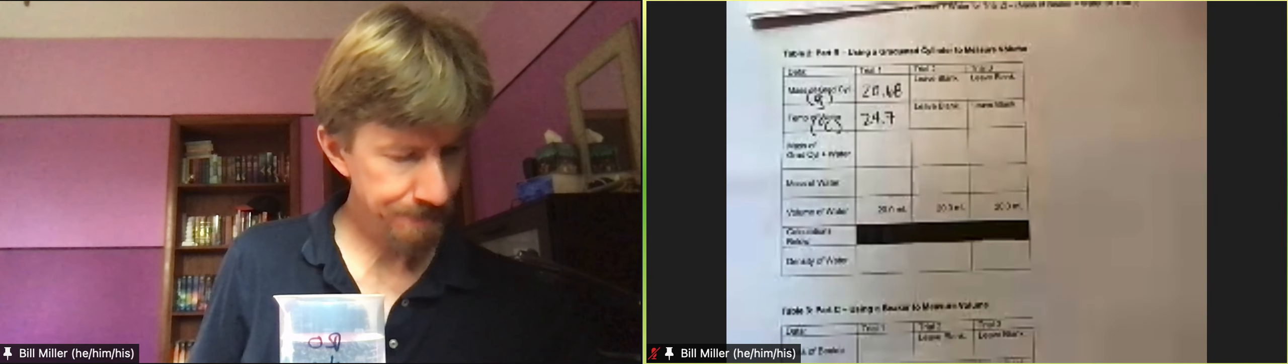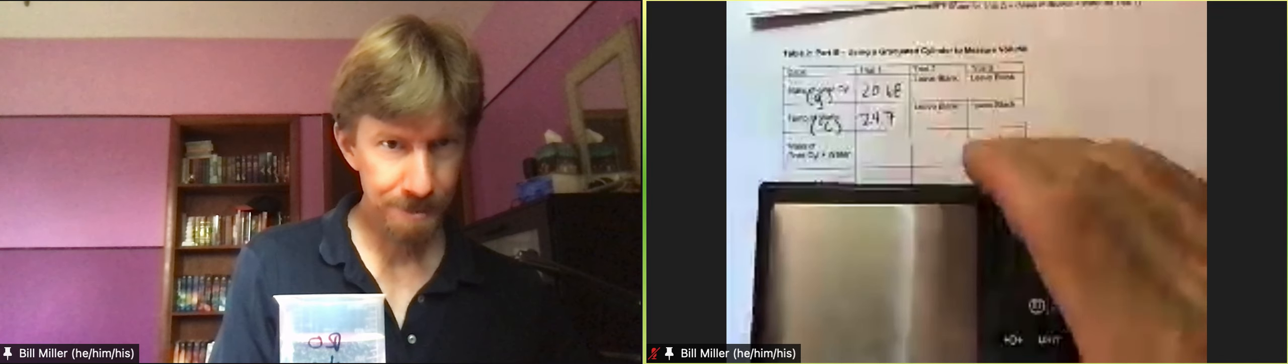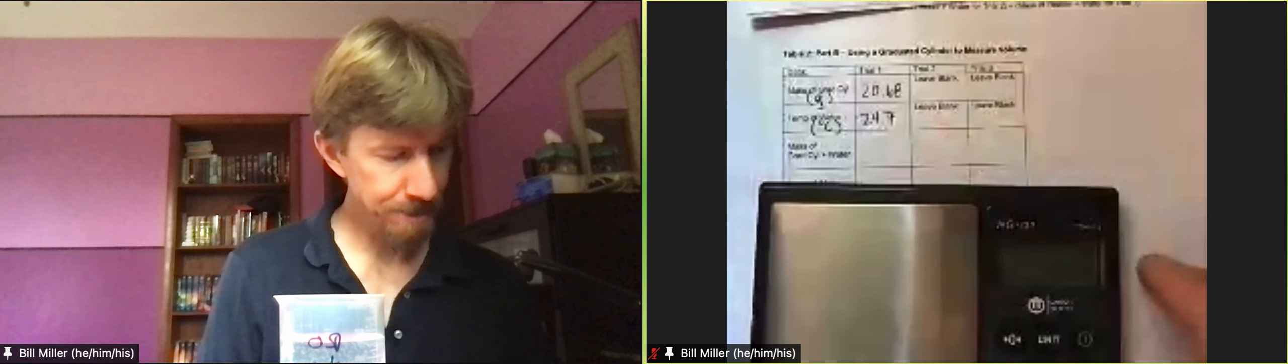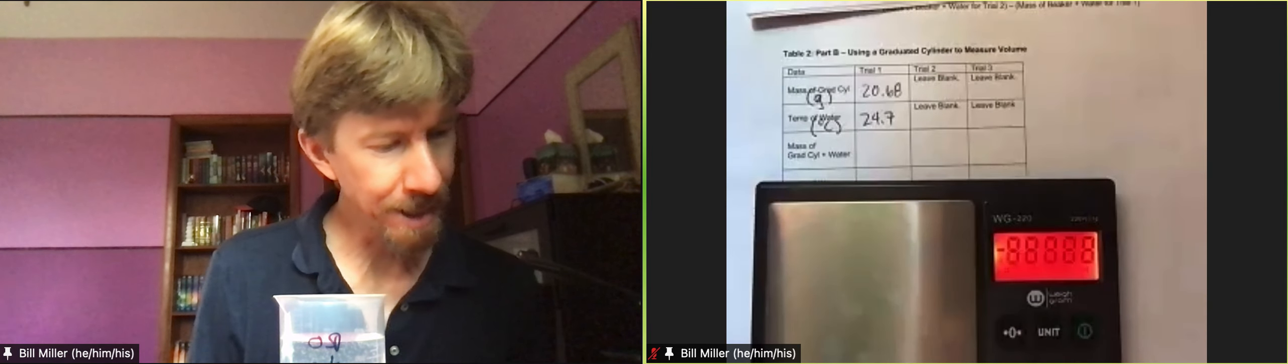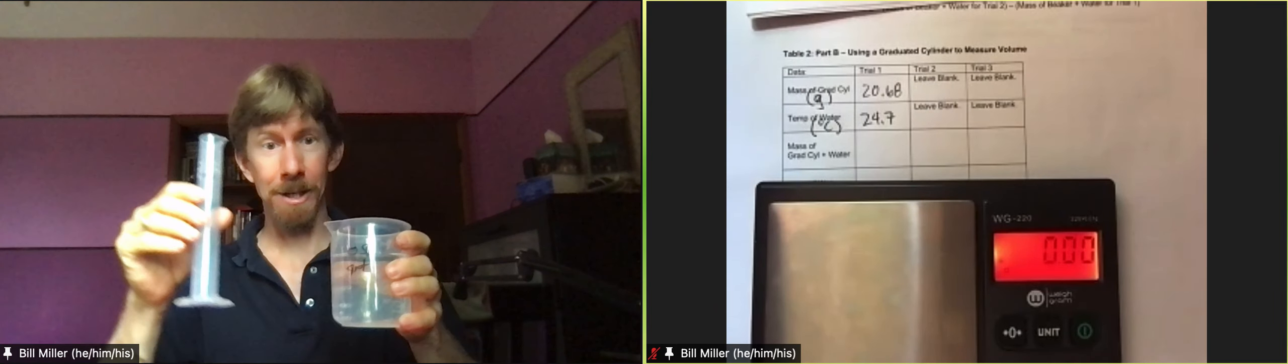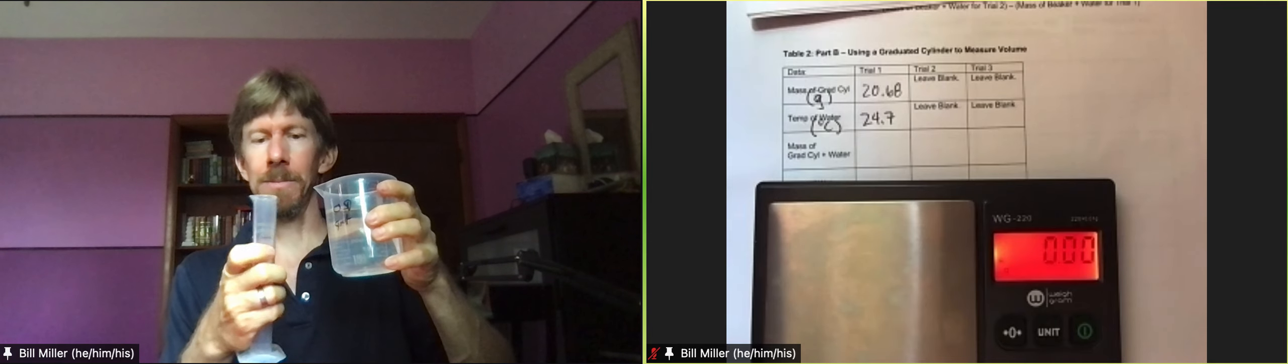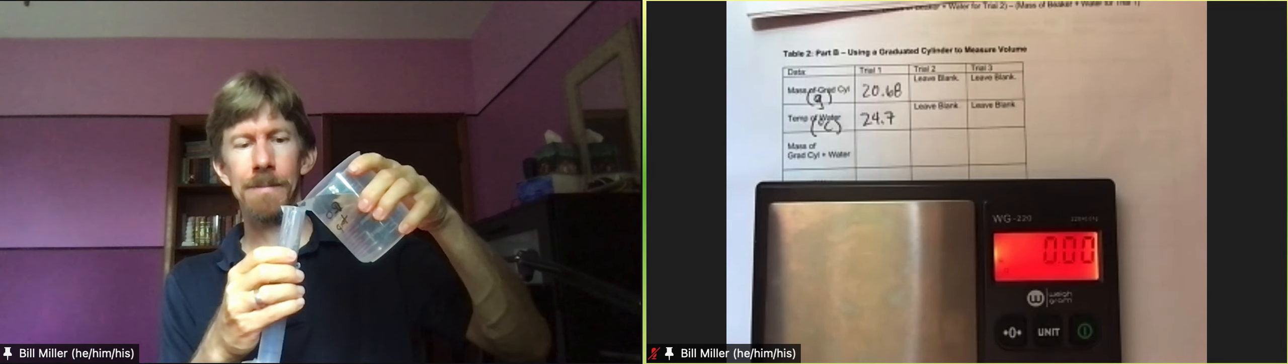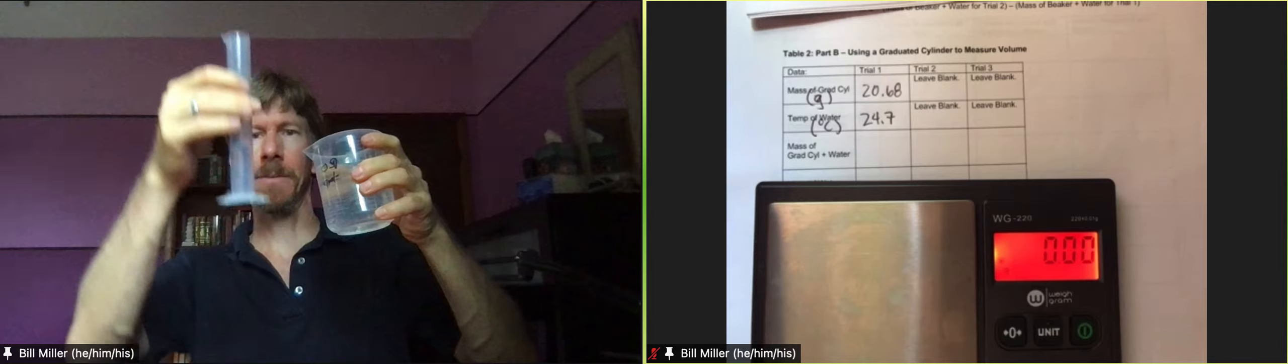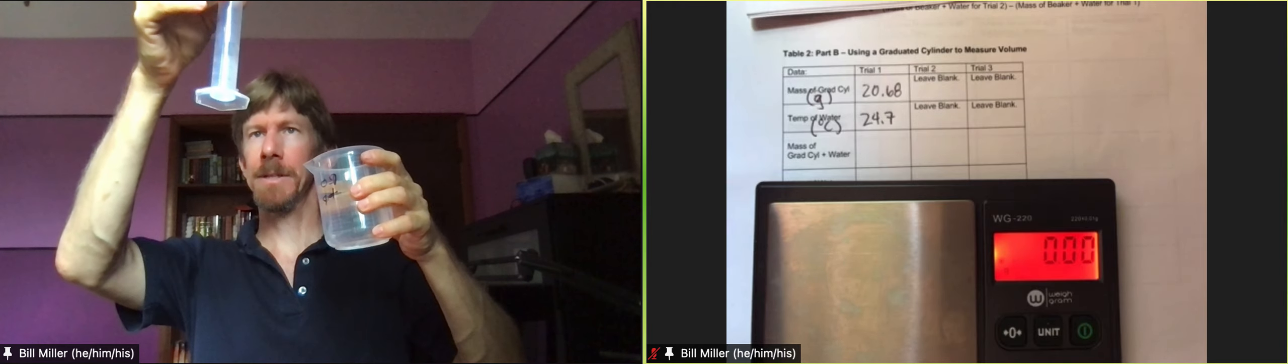Now I'm going to do mass of graduated cylinder plus water. It says measure out 20 milliliters of the room temperature distilled water. I'm going to measure this carefully away from my computer, and I'm going to get it close to 20, actually very close.